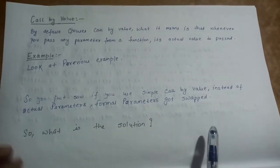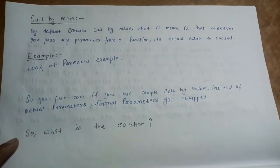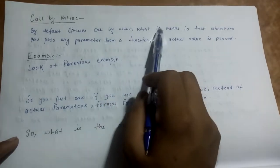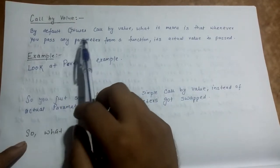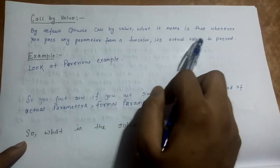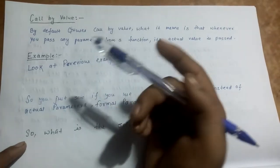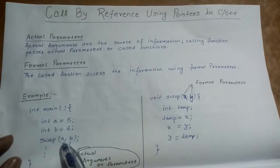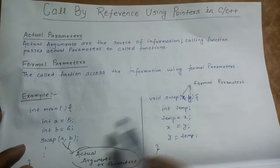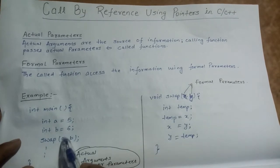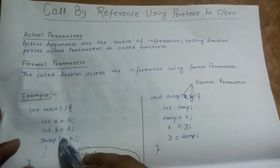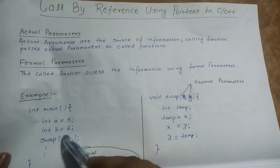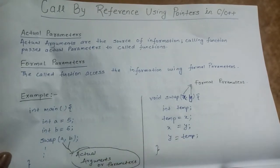Now we should first understand what is call by value. By default, C and C++ uses call by value. What it means is that whenever you pass any parameter from a function, its actual value is passed. If you are passing A and B to this function, call by value says that their original values will be passed — that is, 5 will be passed to X and 6 will be passed to Y. That is call by value: the actual values of the actual arguments will be passed.